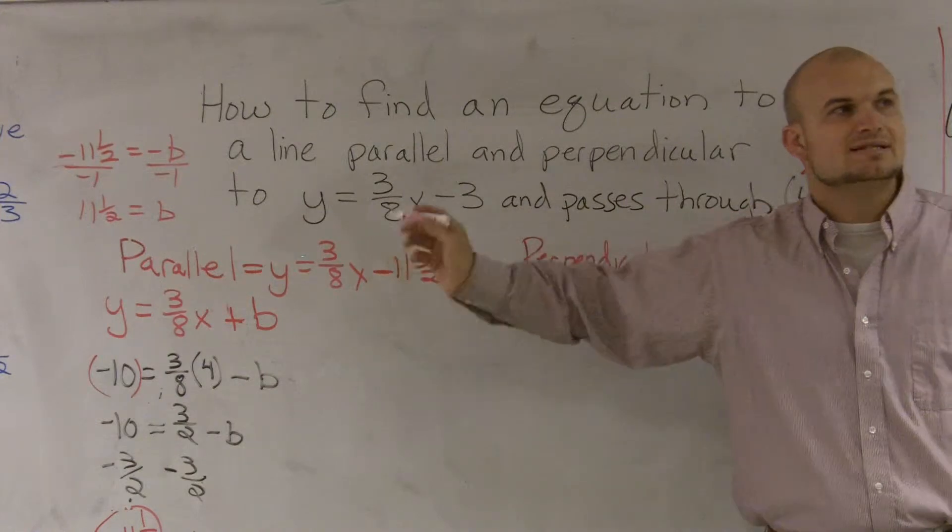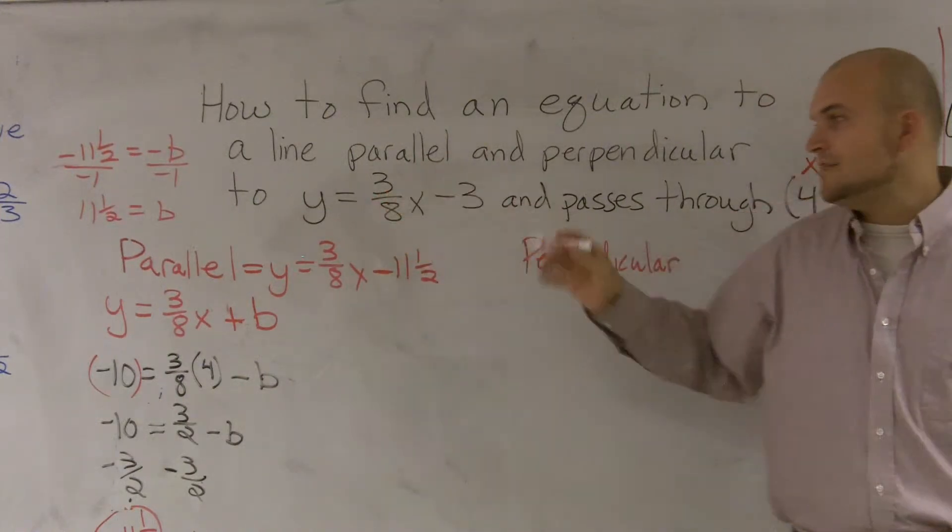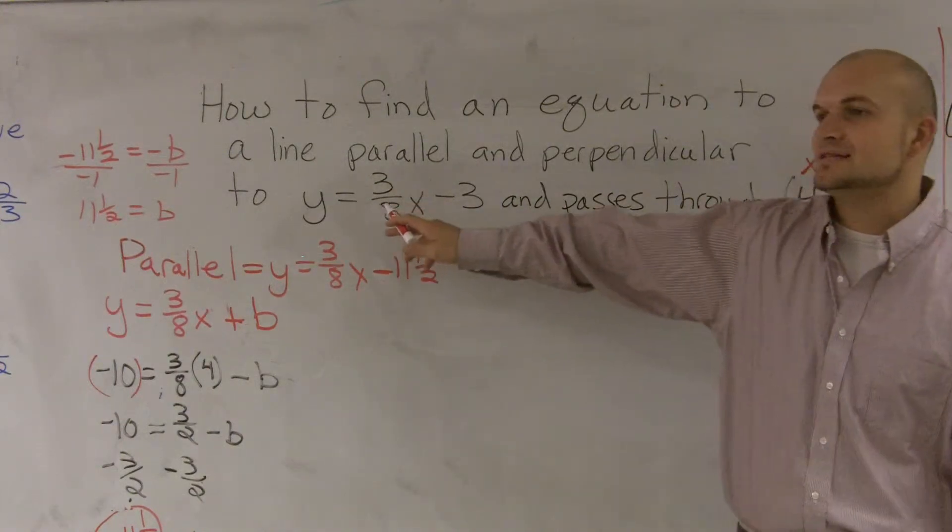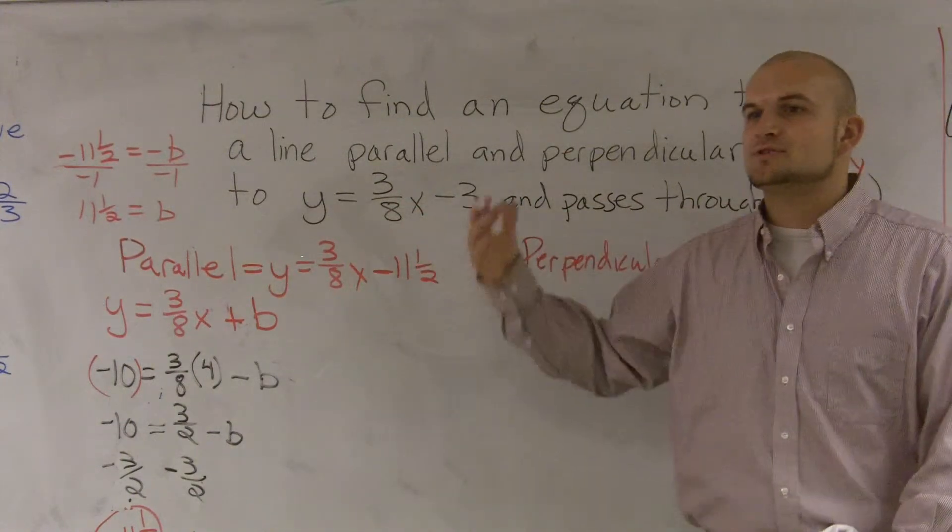Well, the reciprocal of 3/8 is 8/3. And then the opposite, what I mean by opposite, is it has to have the opposite sign. So since this is positive, my new slope is going to be negative.